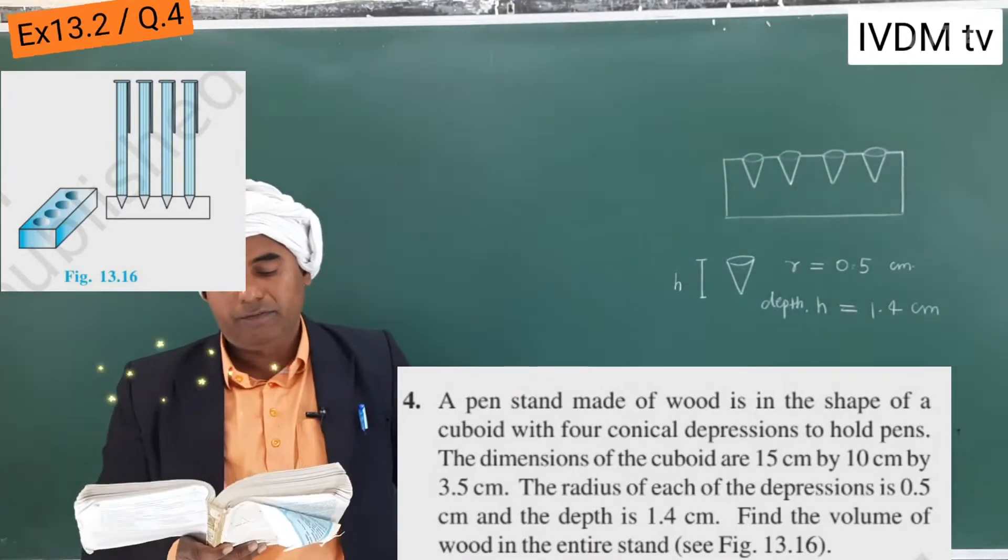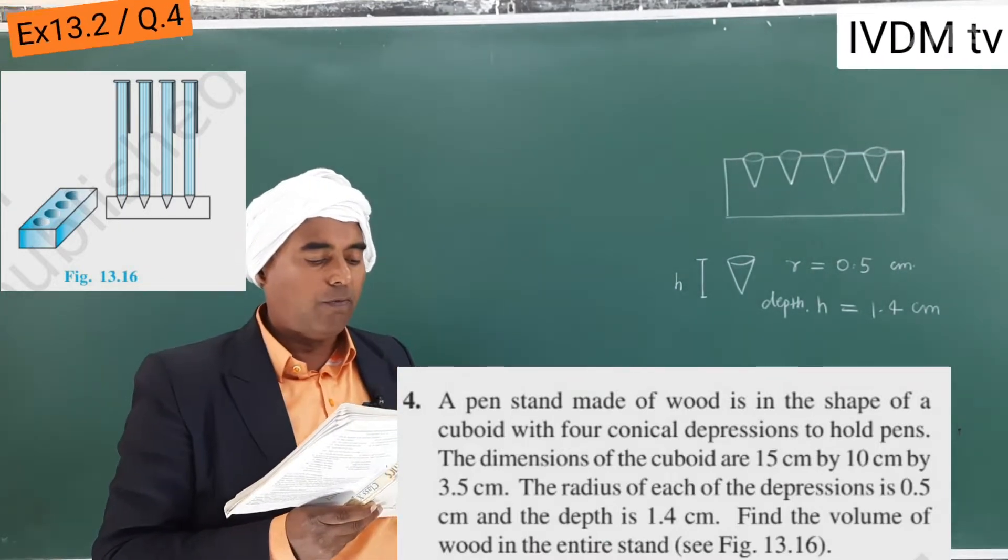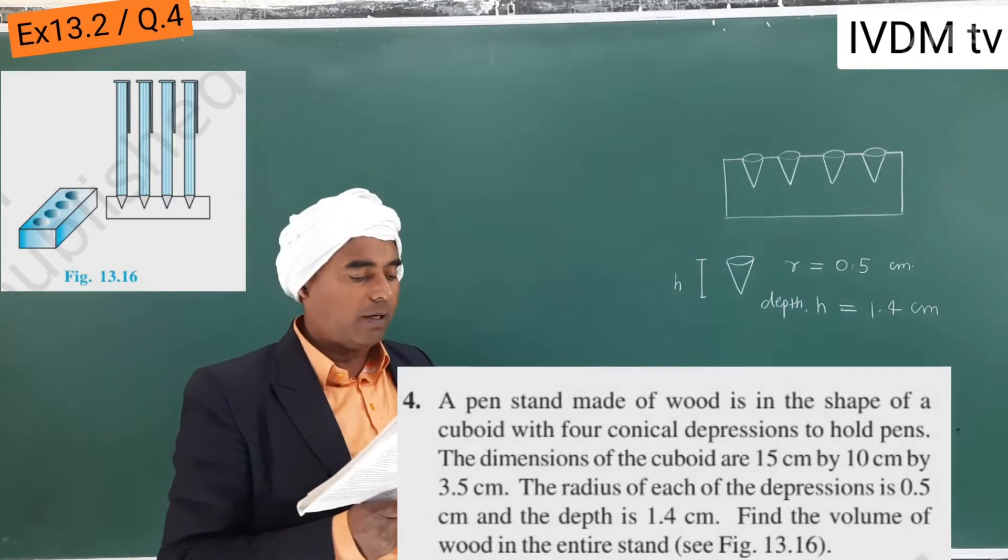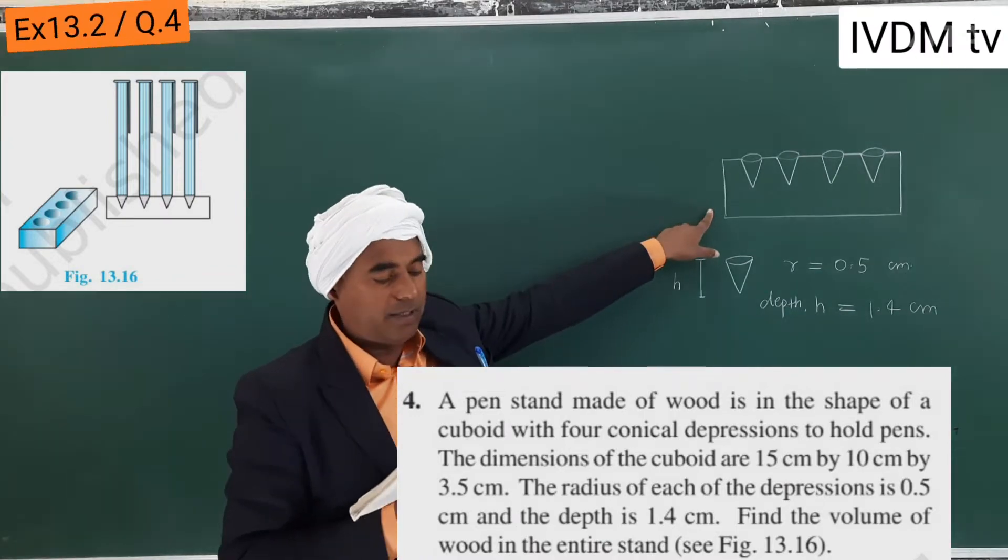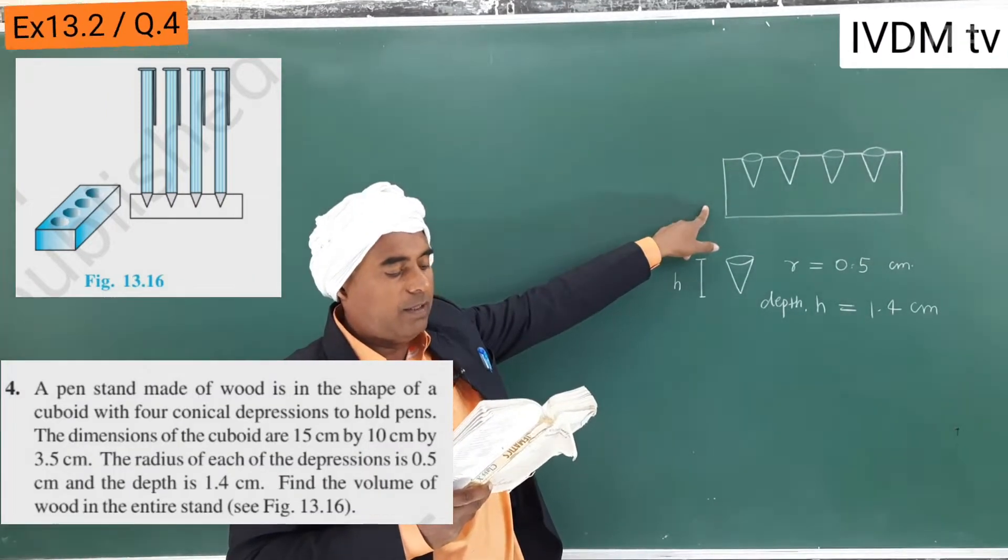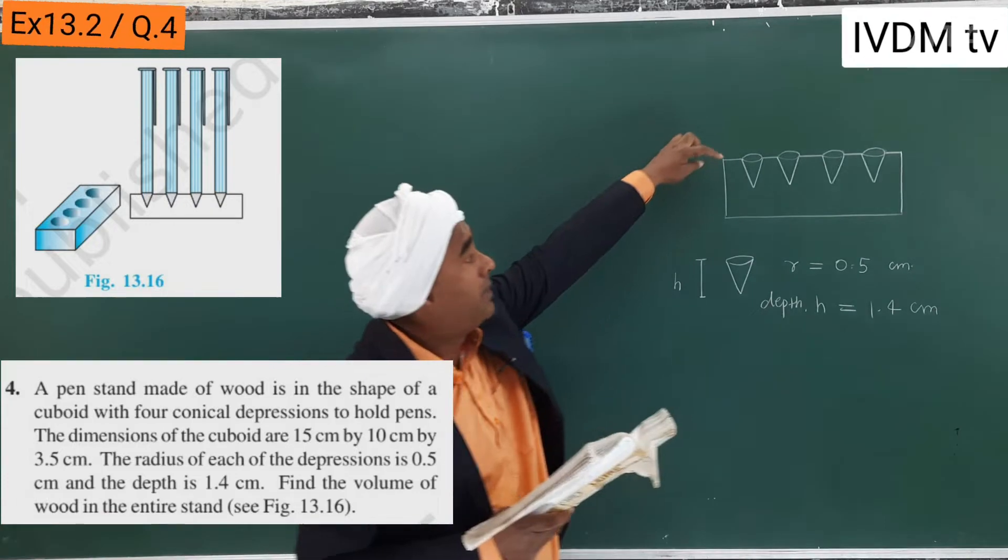A pen stand made up of wood is in the shape of a cuboid. This is the cuboid shape with four conical depressions. Depressions means cutting - depressions to hold pens.